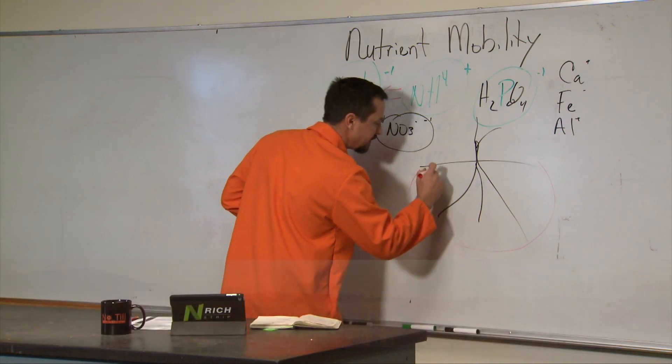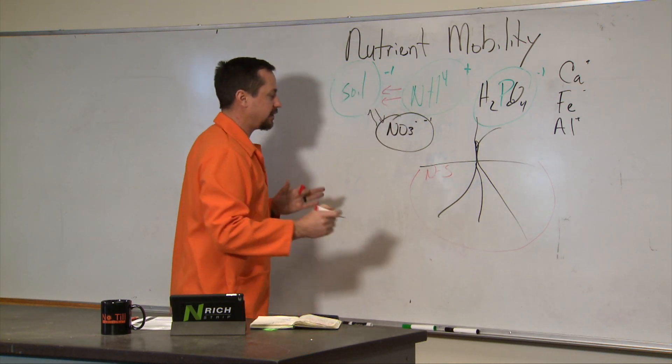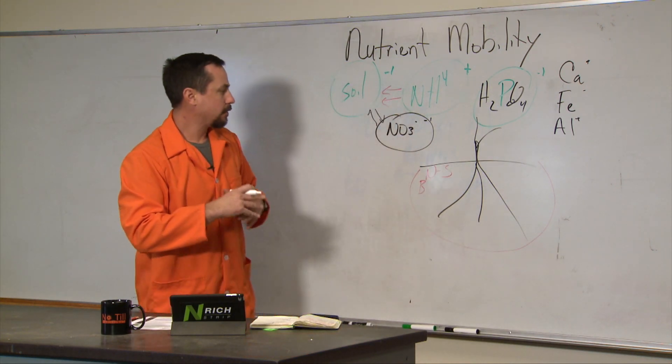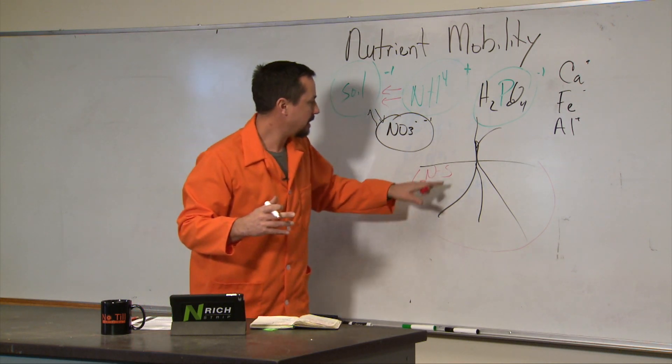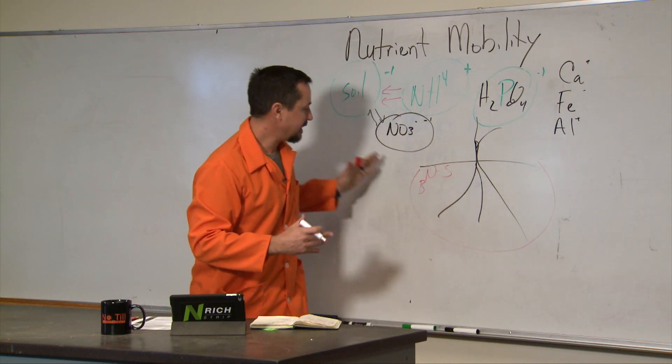So our nitrogen recommendations, our sulfur recommendations, things like boron and others, we make a recommendation based upon yield needed because it is pulling from a volume.